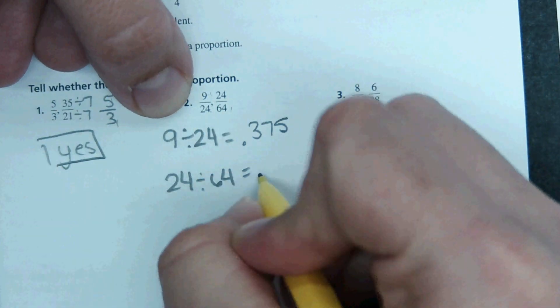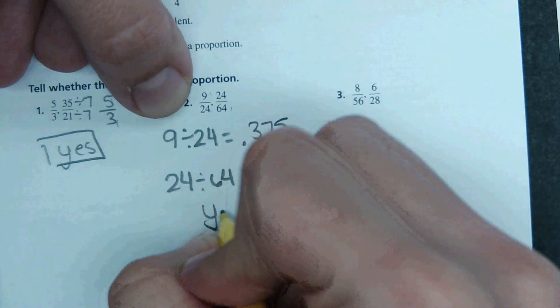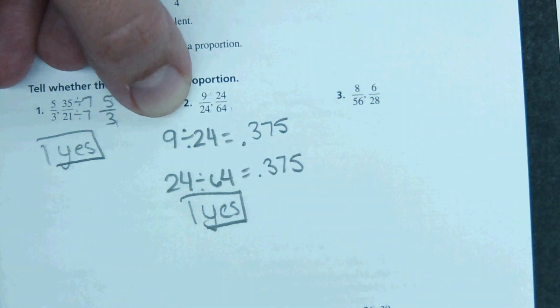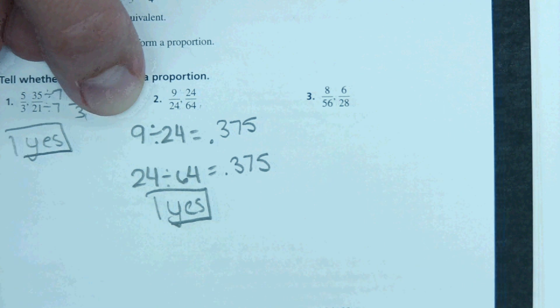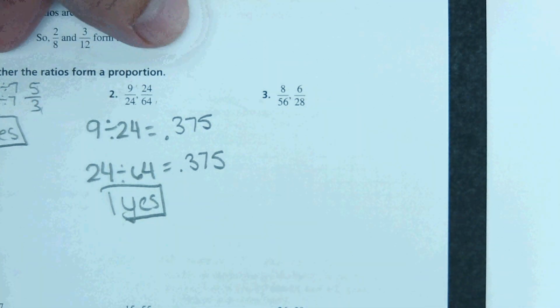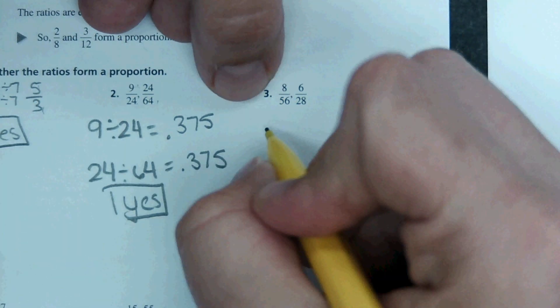So in the calculator, I'm doing 9 divided by 24, then 24 divided by 64, and they come out to 0.375 both times. So since they come out to the same decimal, then these two ratios are proportional. So yes, proportional.